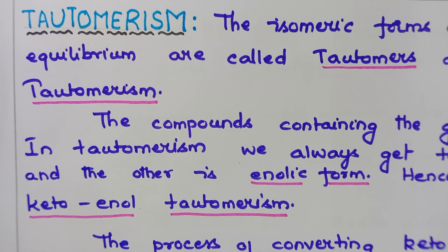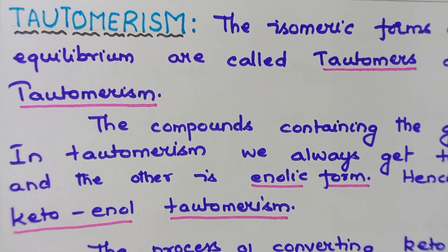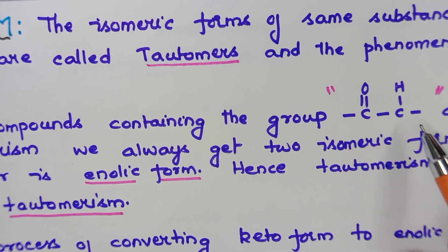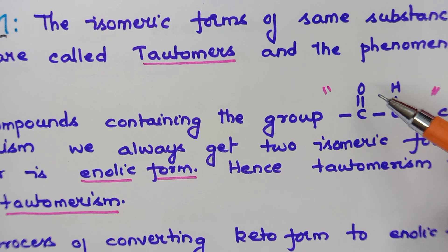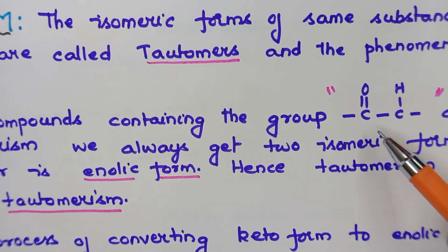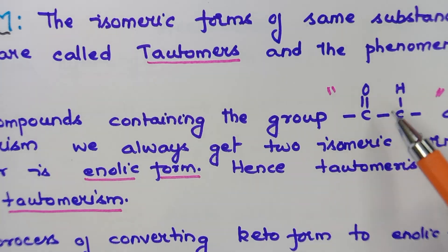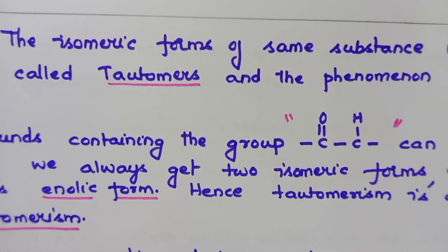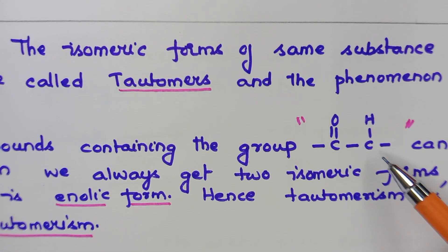Open your notebook and write the definition: the isomeric forms of the same substance which are in dynamic equilibrium are called tautomers, and the phenomenon is called tautomerism. The compounds which contain the group C=O, CH — that is, a carbonyl group with an immediately adjacent carbon bearing hydrogen — can exhibit tautomerism.